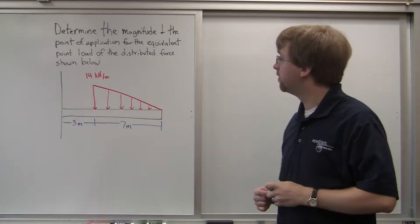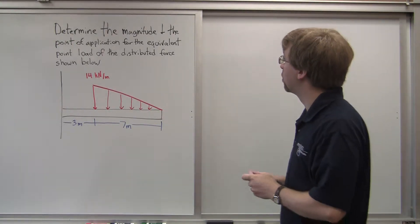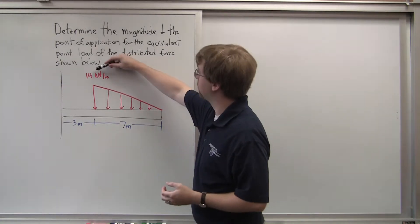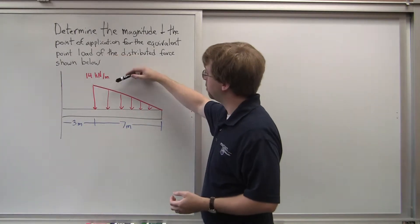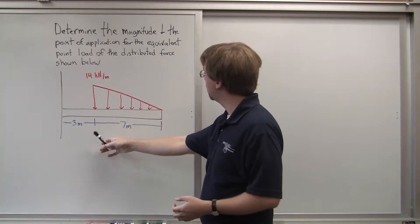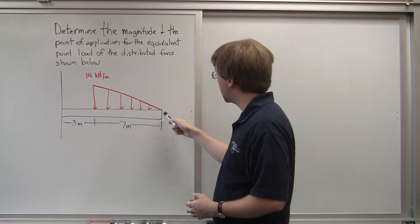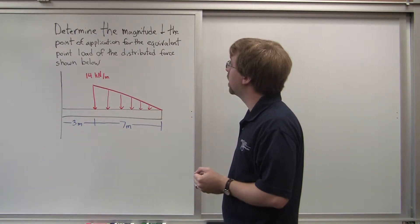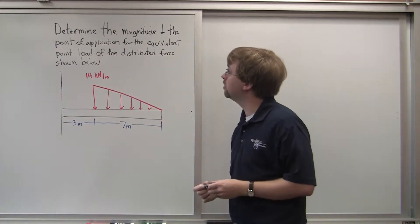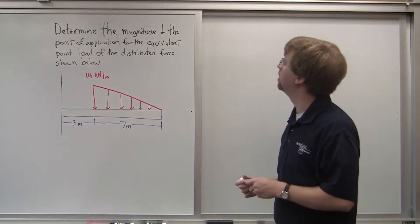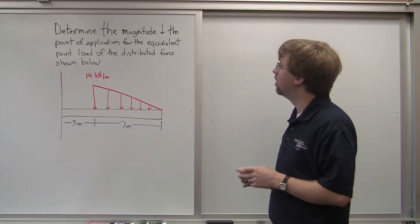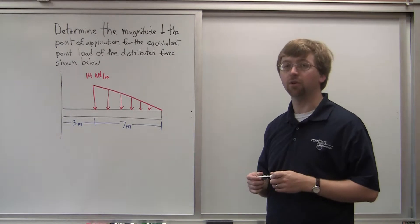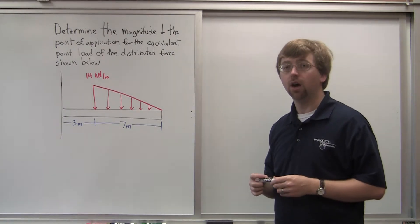Hello. For this video, we have a distributed force. It goes from 14 kN per meter, about 3 meters out on this beam, down to nothing in linear fashion from there. We're asked to determine the magnitude and the point of application of the equivalent point load of this distributed force shown below.